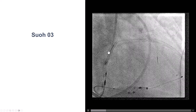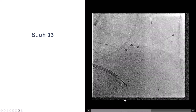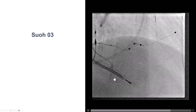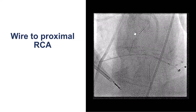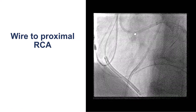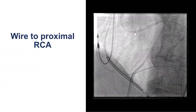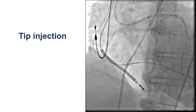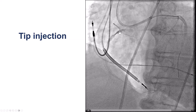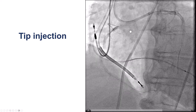We then did surfing using a SUO 03 guidewire, and the wire very easily went right down straight into the PDA and all the way into the proximal right coronary artery. Fairly easy crossing of the septal collaterals that were well developed, and the wire is essentially all the way to the proximal, confirming that this is a relatively short CTO. Here is a tip injection after we delivered the Turnpike LP all the way to the proximal, and we do see the calcification of the proximal right coronary artery.